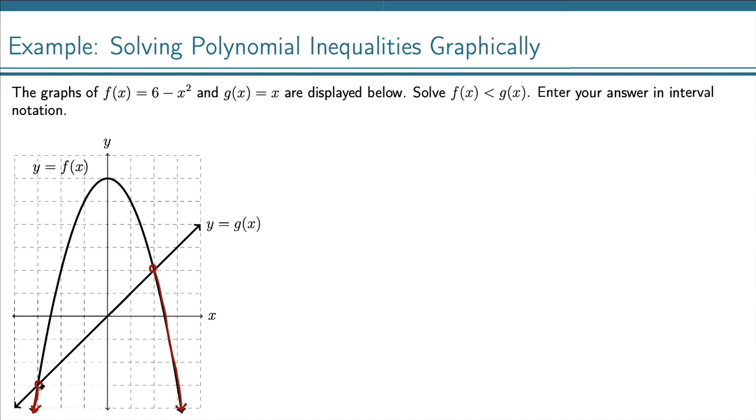So for this piece on the left, that goes to the left forever, so from negative infinity up to this point here, which is at negative 3, that x value is negative 3. And we do not include that point, so we put parentheses.